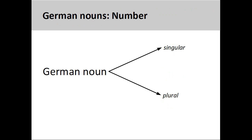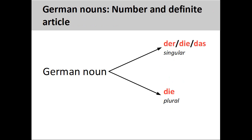German nouns can either be singular or plural. Unlike singular nouns, plural nouns manifest no gender. The only definite article for plural nouns is 'die.'